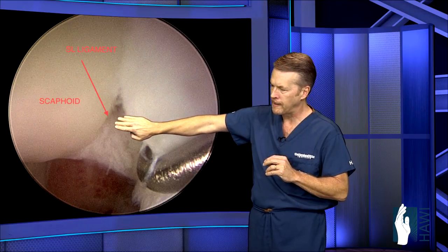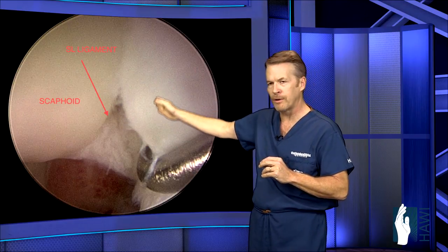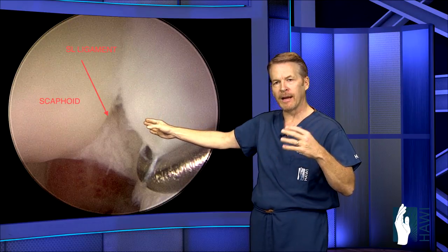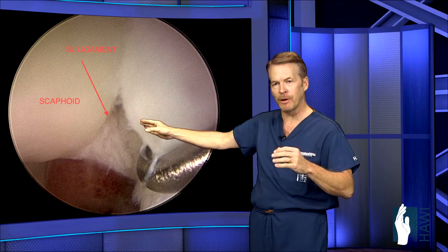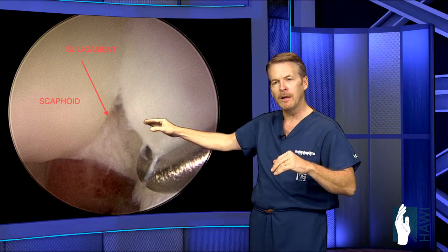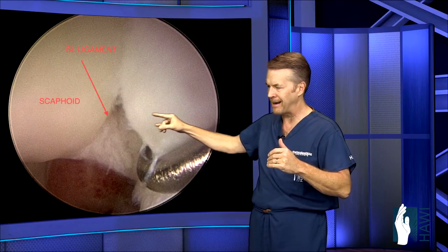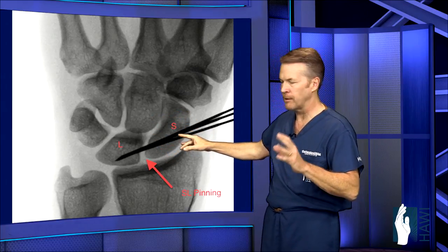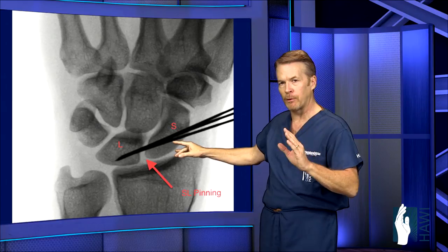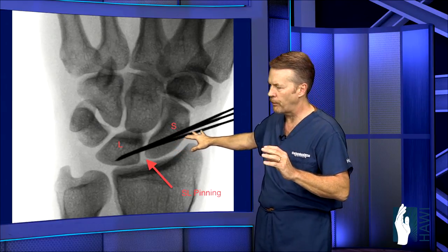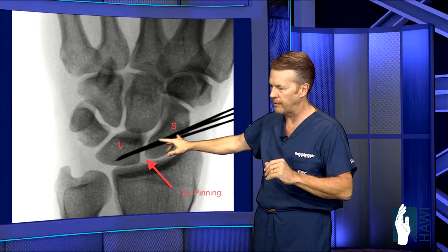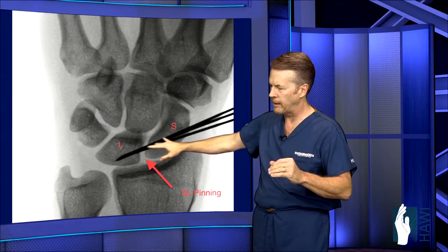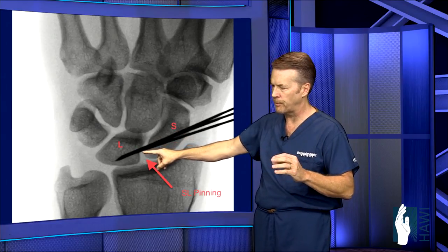The probe is pulling the scapholunate ligament away from the scaphoid — this is a pretty substantial tear. Usually these ligaments are torn down the middle, in which case they don't have the ability to be repaired. Sometimes, though, they're pulled off the edge of the scaphoid or the lunate, where you can actually go put an anchor in place and tie them down. But in this case, since the ligament is frequently torn down the middle, what we do is go in and put three stainless steel pins between the carpal bones — the scaphoid and the lunate — to hold them together. These are cut off right underneath the skin.